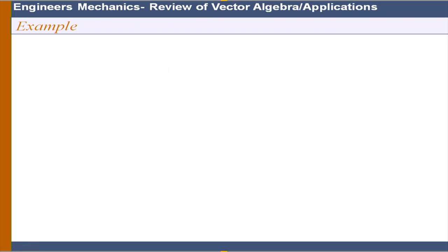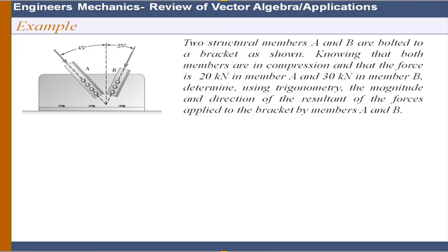Here is an example of a bracket where two members are attached. Member A is subject to a compressive force of 20 kN, and member B is subject to a compressive force of 30 kN. The question is: using trigonometry, determine the magnitude and direction of the resultant of the forces applied to the bracket by members A and B.